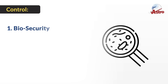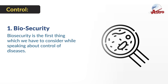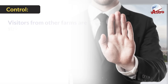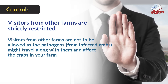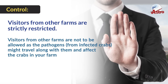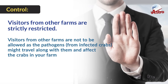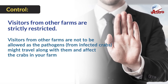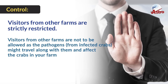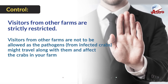Control — 1. Biosecurity: Biosecurity is the first thing we have to consider when speaking about control of diseases. Visitors from other farms are strictly restricted, as pathogens from infected crabs might travel along with them and affect the crabs in your farm.